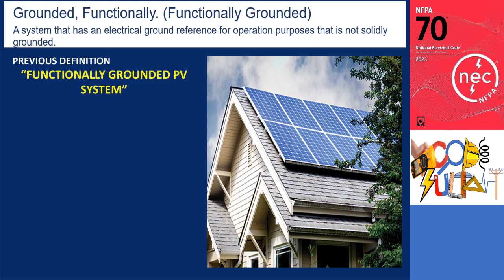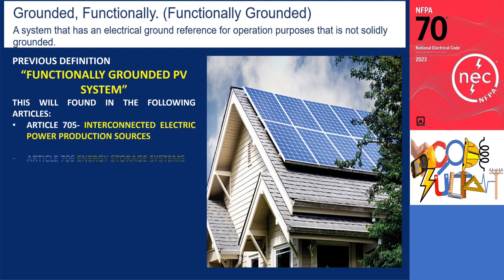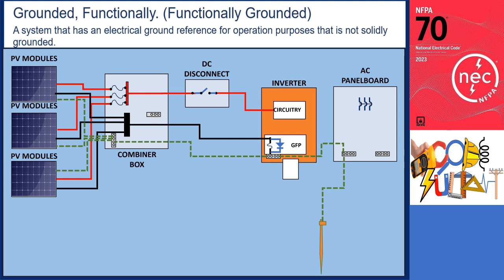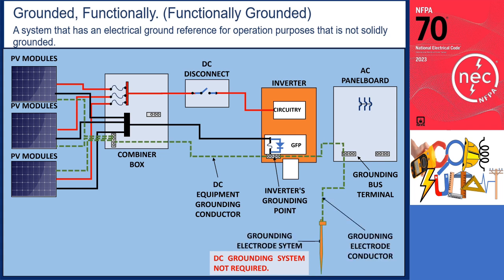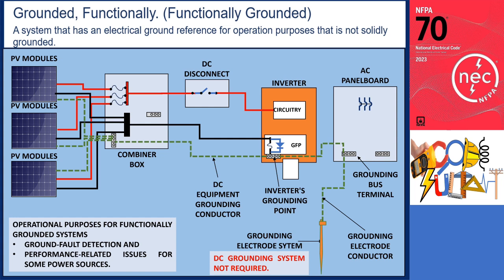The term functionally grounded PV system has been revised to functionally grounded by the format used in Article 100, because the definition is referenced in multiple articles such as Articles 705, 706, and 712. Functionally grounded refers to a system that has an electrical ground reference for operation purposes that is not solidly grounded. The ground connection is established through electronic means internal to an inverter, which also provides ground fault protection. This configuration allows the equipment grounding conductor of the PV circuit to be connected to the inverter's grounding point, eliminating the need for a separate DC grounding system. The inverter's grounding point is then connected to the grounding system or grounding electrode of the residential facility or building. Functionally grounded systems serve various operational purposes such as ground fault detection and addressing performance-related issues for certain power sources.